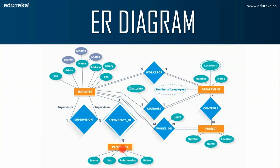For the project entity, every project can be uniquely identified by project number and project name, which are unique for each project. Coming to the dependent entity — it has two rectangles because it is a weak entity. A weak entity is dependent on another entity. For example, I as an employee might have a health insurance nominee, like my sister. The dependent entity's details are taken from the employee entity, so dependent is completely dependent on employee. That is what a weak entity means — it cannot exist without another entity.